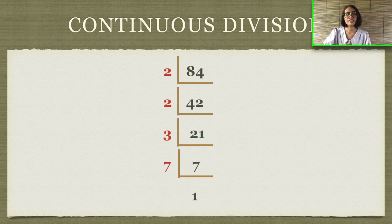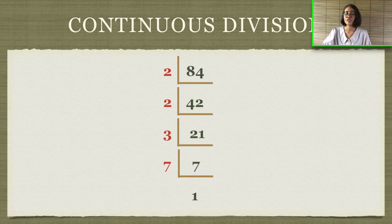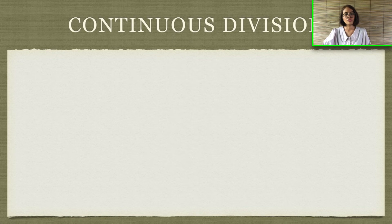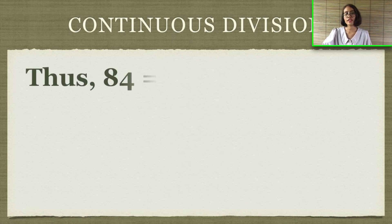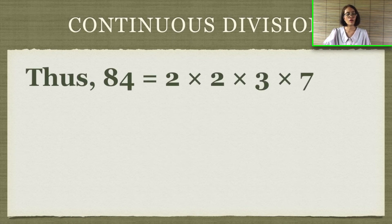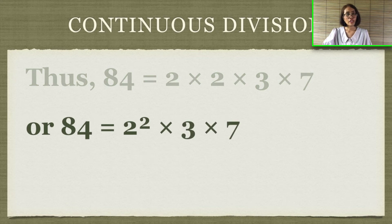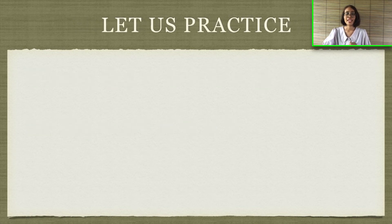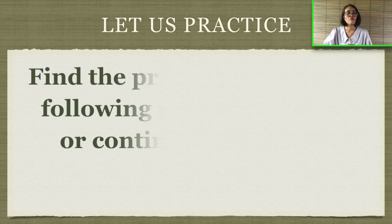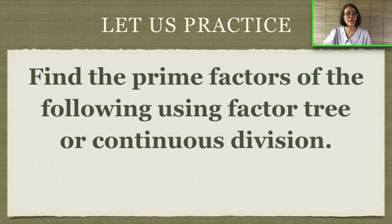Let's look at the numbers in red: 2, 2, 3, and 7 — the same as before. So we can say 84 equals 2 times 2 times 3 times 7, or in exponential form, 84 equals 2 squared times 3 times 7.